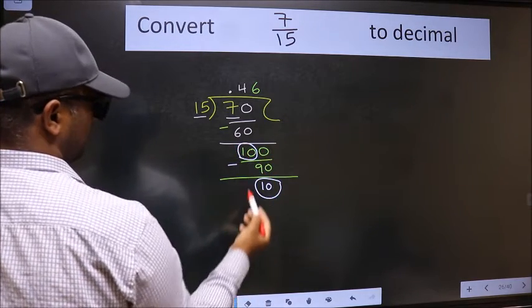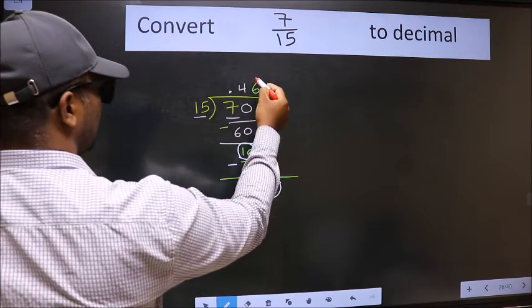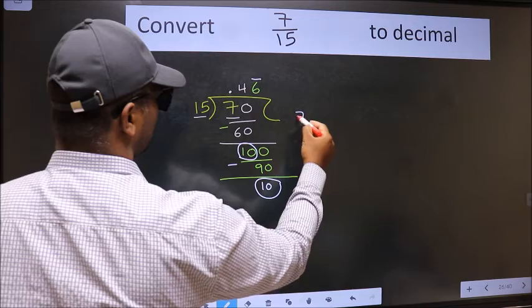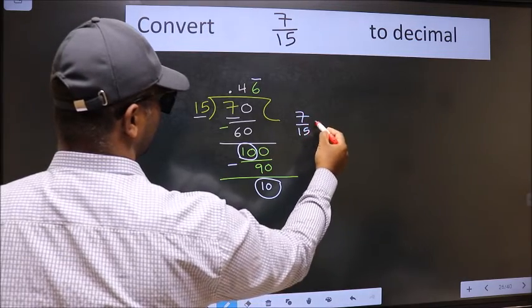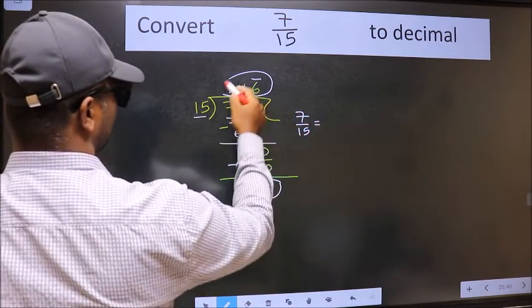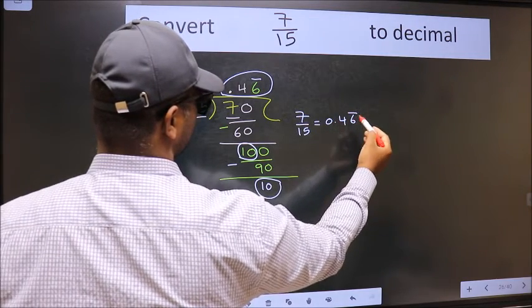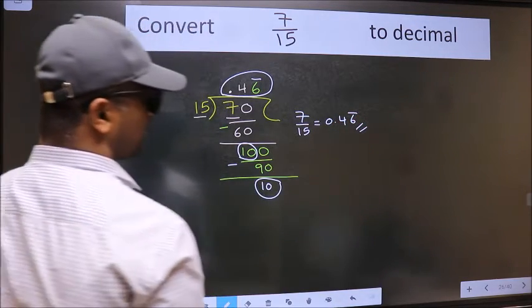We got 10 again. Earlier also we got 10. That means we get bar on this number. Therefore, decimal of 7 by 15 is this one: 0.46 bar on this. This is our answer.